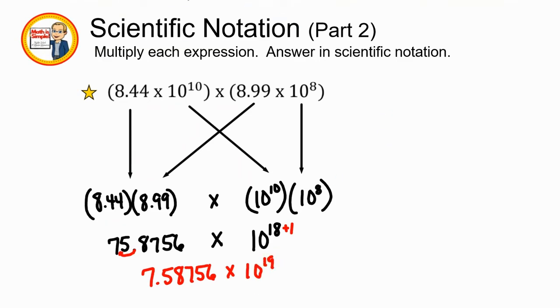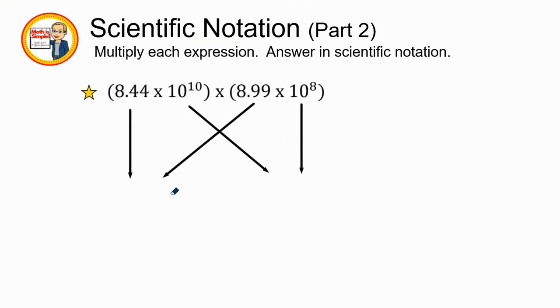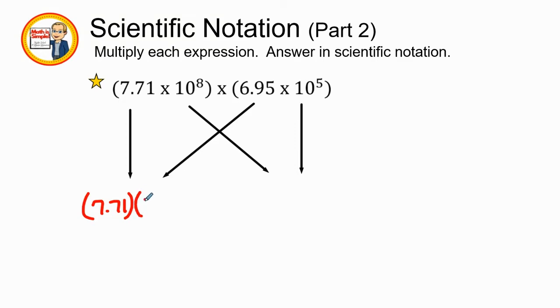Our next problem, let's try that again, get some practice. Here we go. Our next example, we have 7.71 times 10 to the 8th times 6.95 times 10 to the 5th. So here we go with 7.71 times 6.95 times, with our exponents, it's 10 to the 8th power multiplied by 10 to the 5th power.